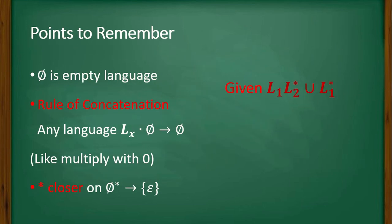Now the given expression is L1 concatenation with L2 star union with L1 star. Let's see what happens. Replace them by their expression. So L1 is φ, L2 is {a} star union with L1 is φ, and there is star, so φ*.